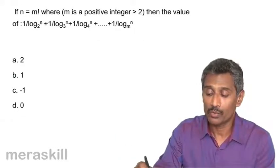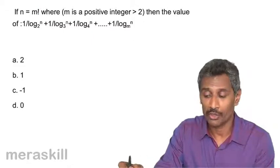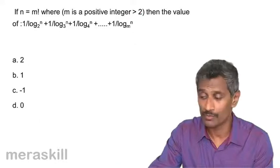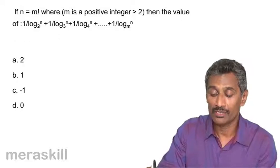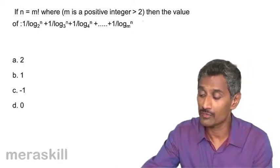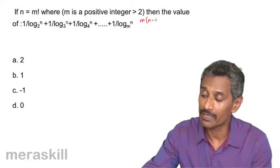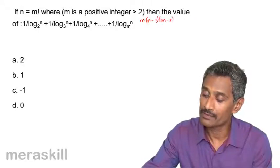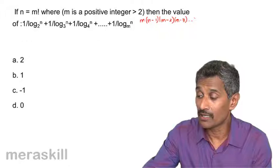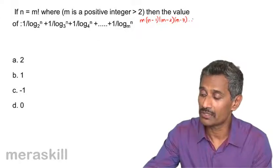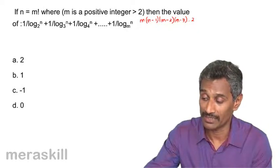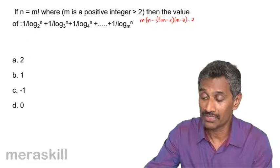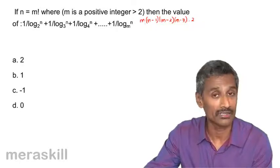The next problem states: n = m!, where m is a positive integer greater than 2. We need to find the value of a given expression. First, let's recall what m factorial means: m! = m × (m−1) × (m−2) × ... × 2 × 1. Since m > 2, for example if m = 10, then 10! = 10 × 9 × 8 × 7 × 6 × 5 × 4 × 3 × 2 × 1.